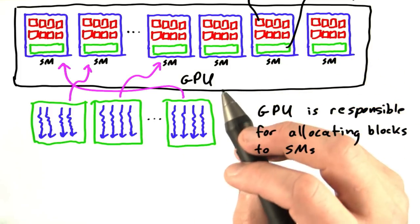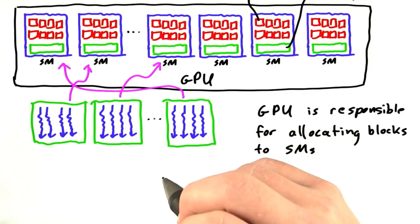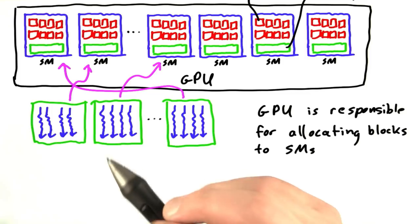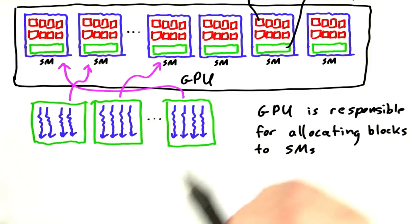So as the programmer, all you have to worry about is giving the GPU a big pile of thread blocks, and the GPU will take care of assigning them to run on the hardware SMs. All the SMs run in parallel and independently.